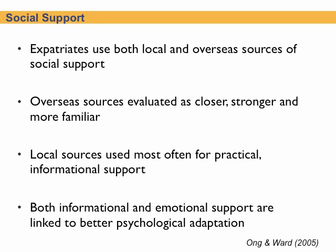Here are some ideas about social support and getting that help. Expatriates can use local and overseas sources for social support — overseas sources are evaluated as closer, stronger, and more familiar, while local sources are used most often for practical, informational support. There are also different emotional support mechanisms to help with psychological adaptation as you go through the change process of assimilating and adapting into a new culture.